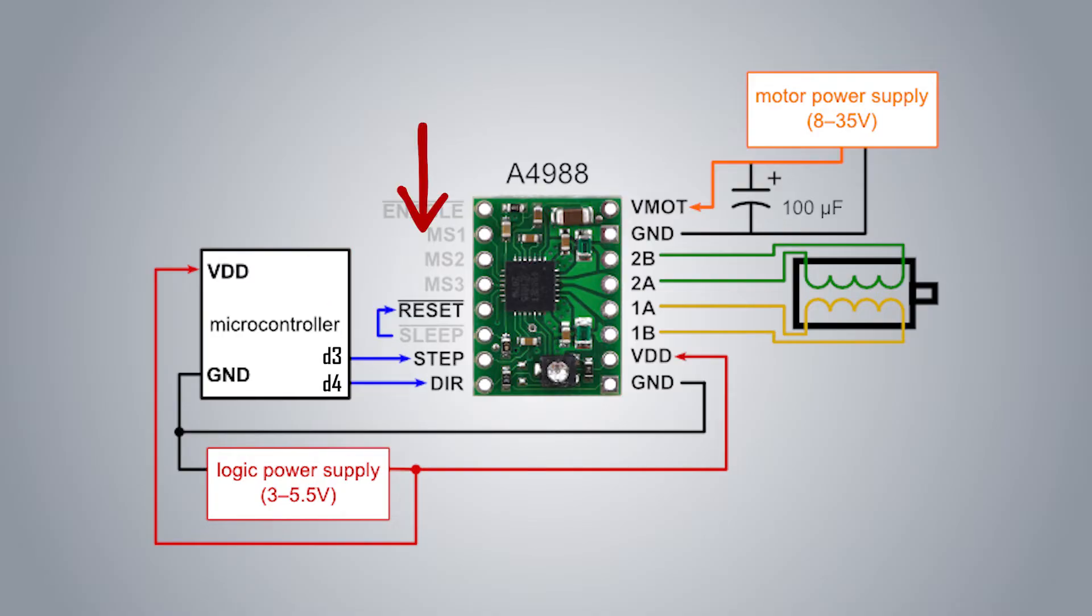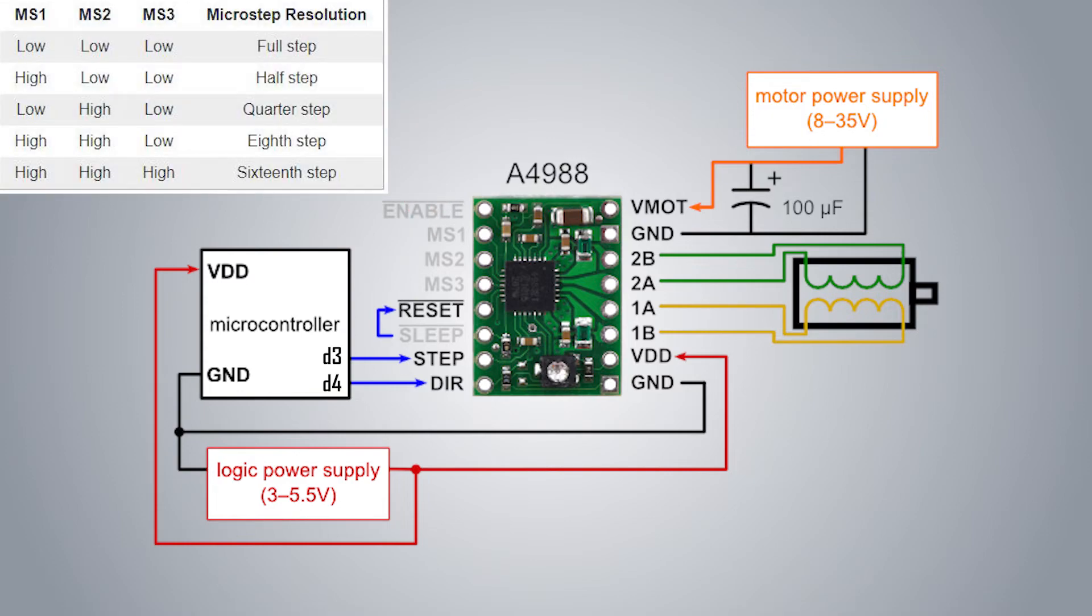The MS1, MS2 and MS3 pins are for enabling microstepping. You can connect 5 volt input to the pins from the Arduino to enable microstepping. There are 5 different modes for microstepping as shown in the table.